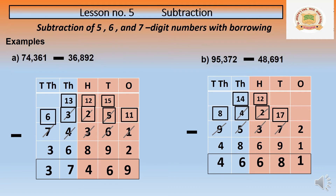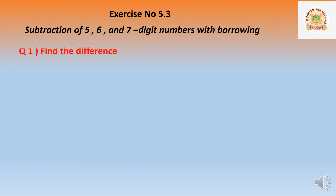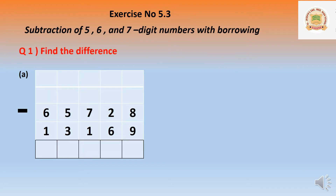Question number one: find the difference. Given: 65,728 minus 13,169. In the ones place, digits are 8 and 9 — 8 minus 9 not possible. We borrow from the tens place. The 20 gives 10 to 8, making it 18, and 2 becomes 1. Eighteen minus nine equals nine. Now in the tens place, 1 minus 6 — cannot minus.